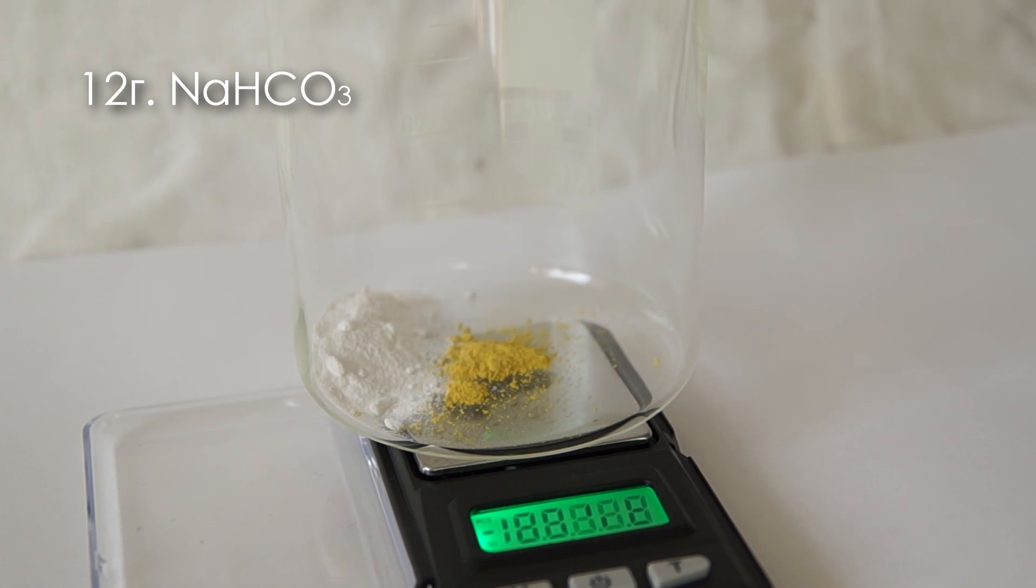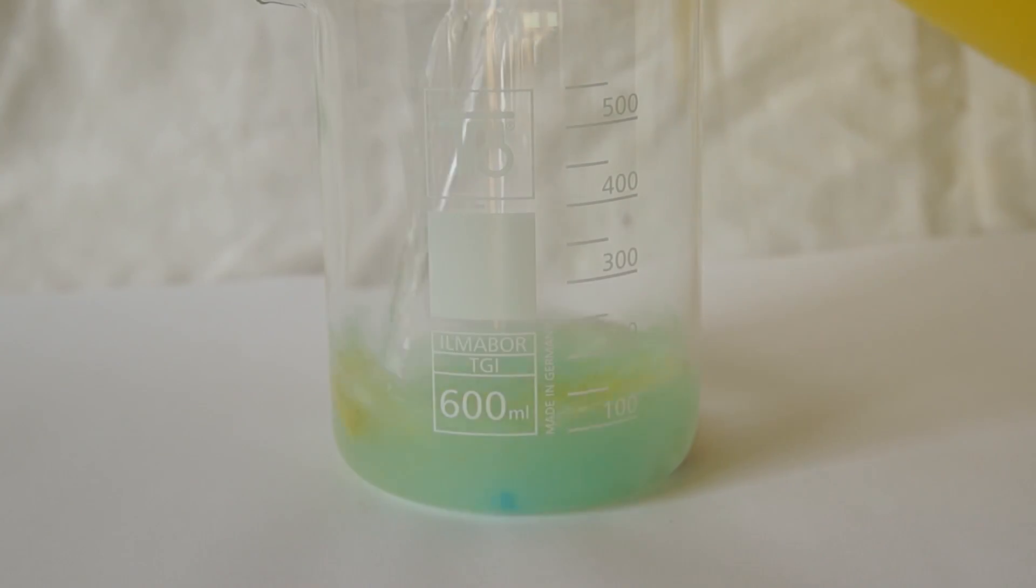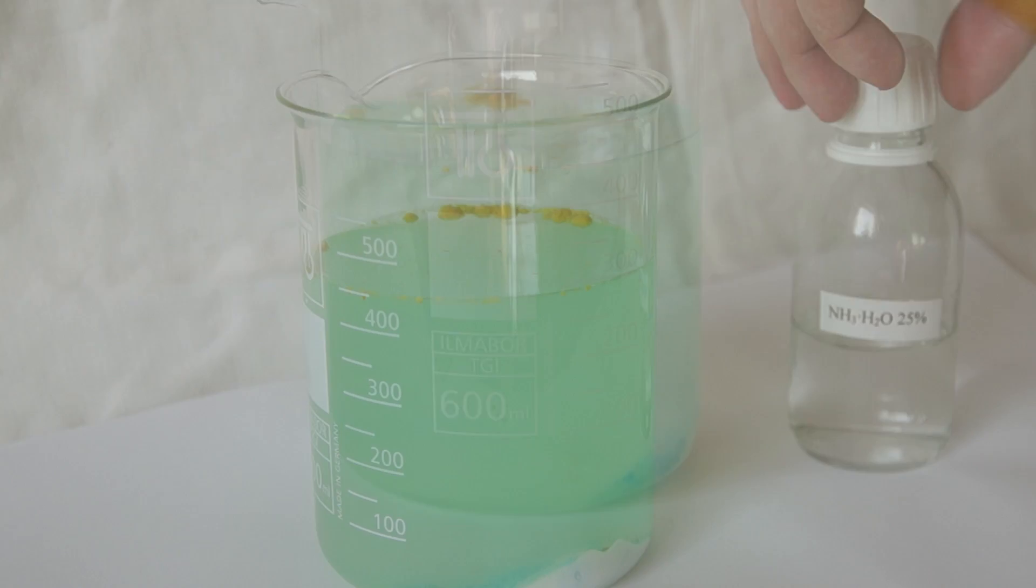Furthermore, adding 20 grams of baking soda and half a gram of copper sulfate. Next, pour half a liter of water to our mixture.